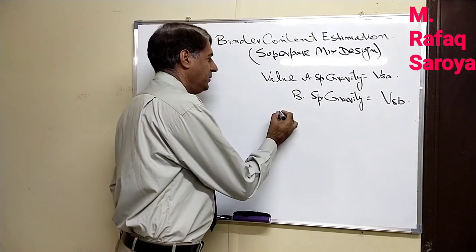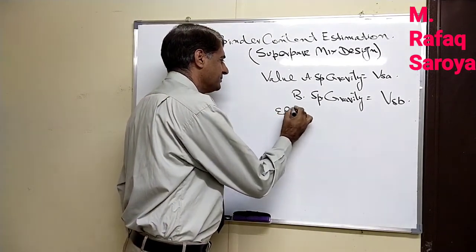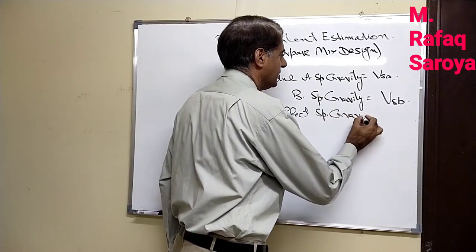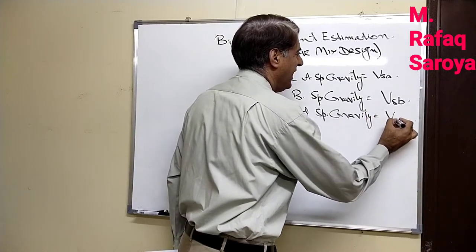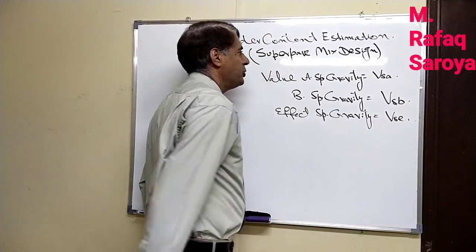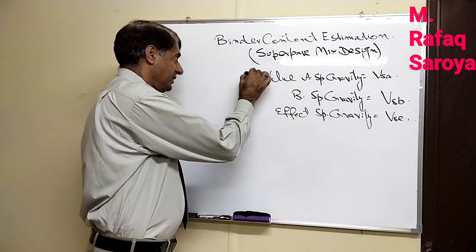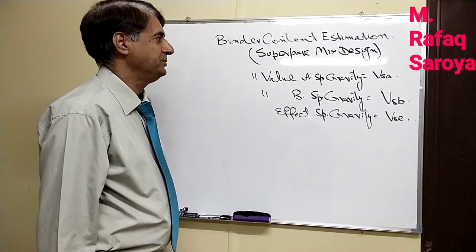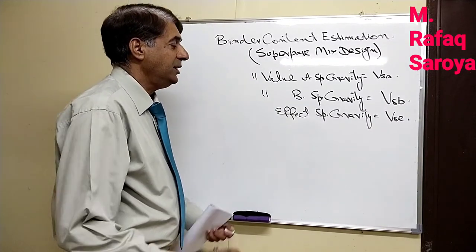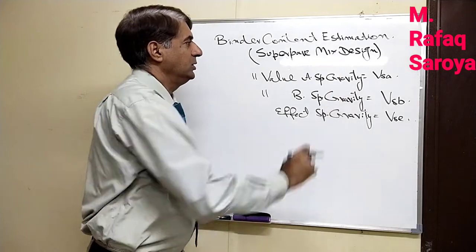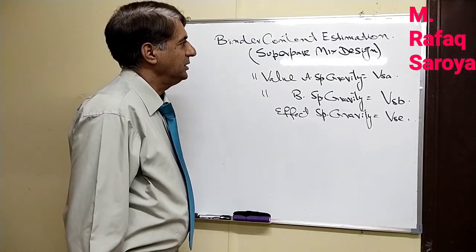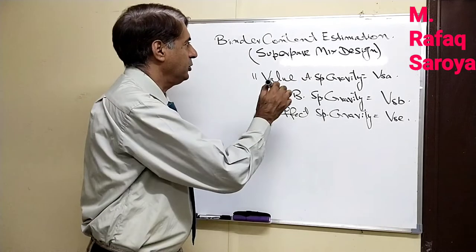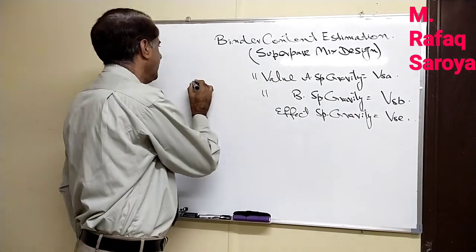Then we have the effective specific gravity, which is represented by GSE. So keep this in mind, these two values which are written above - this is the total value present in the aggregate, so these are the combined values.